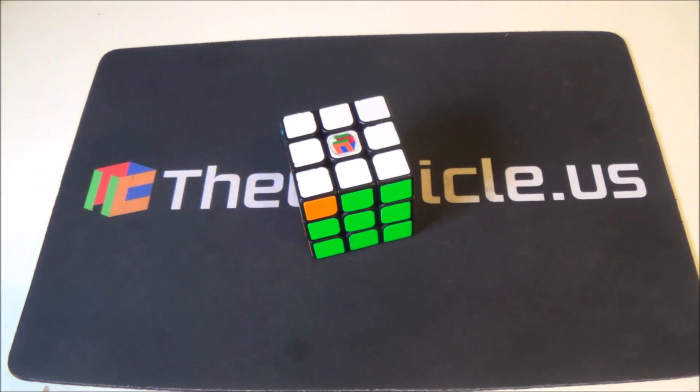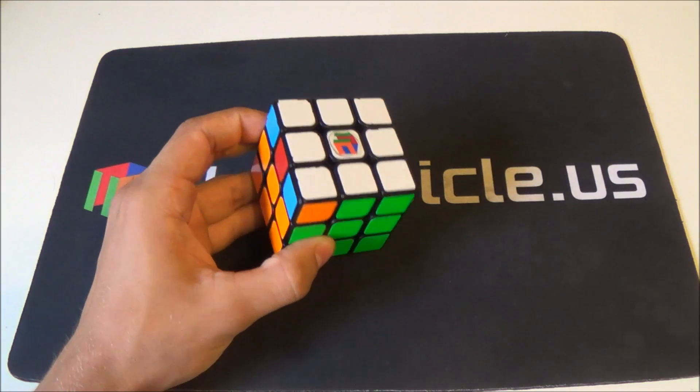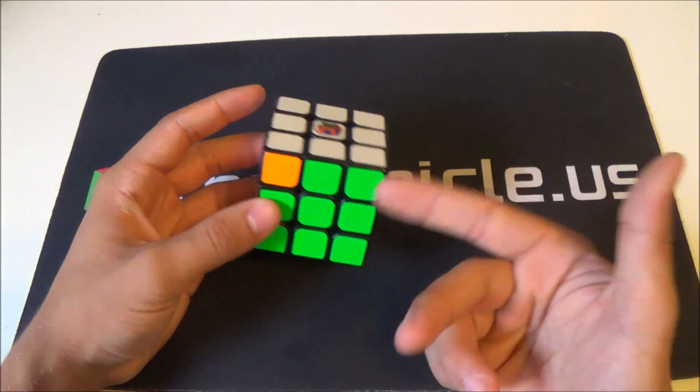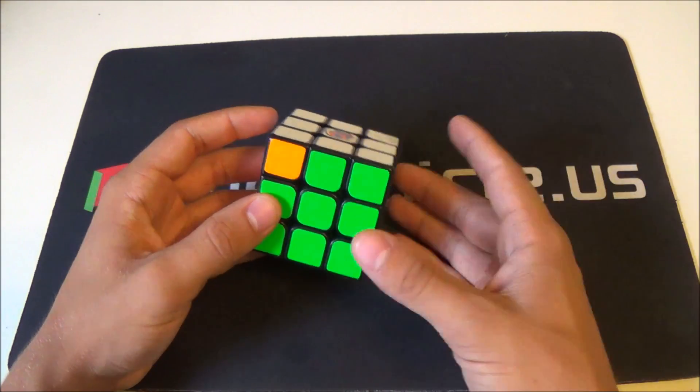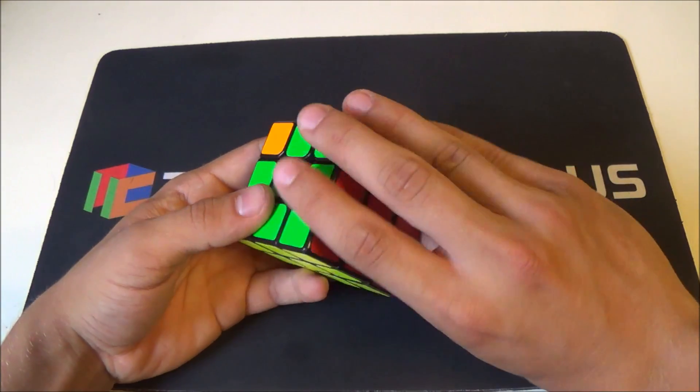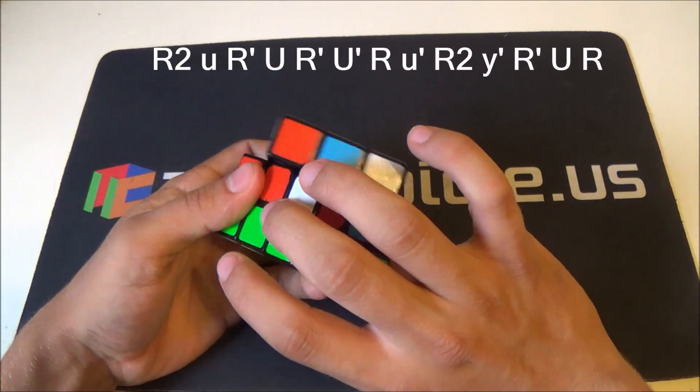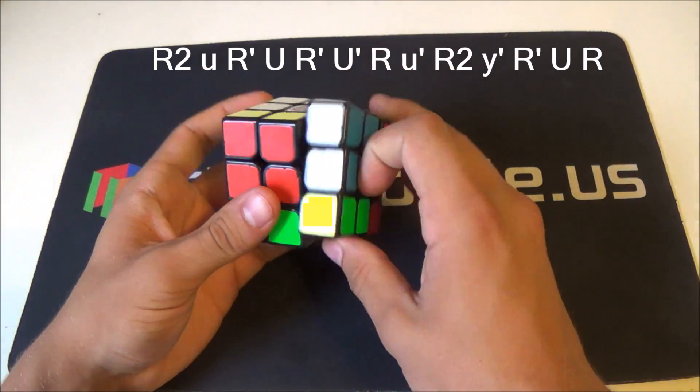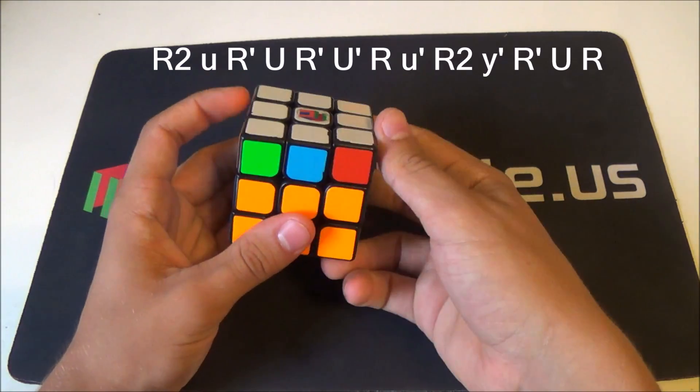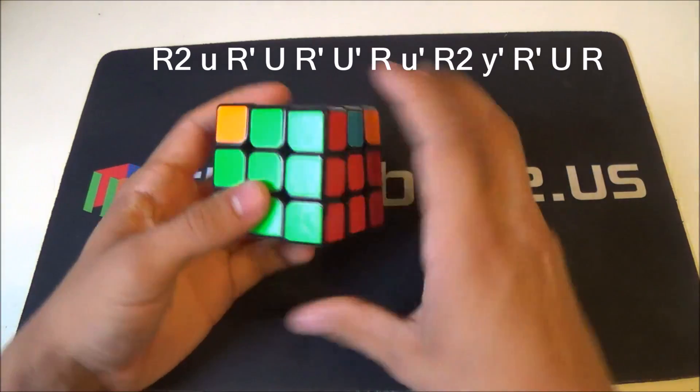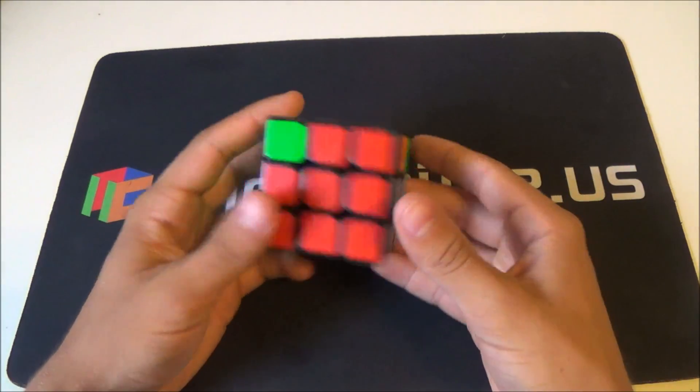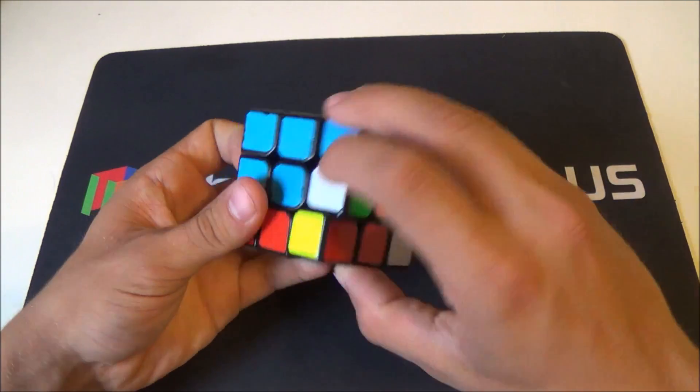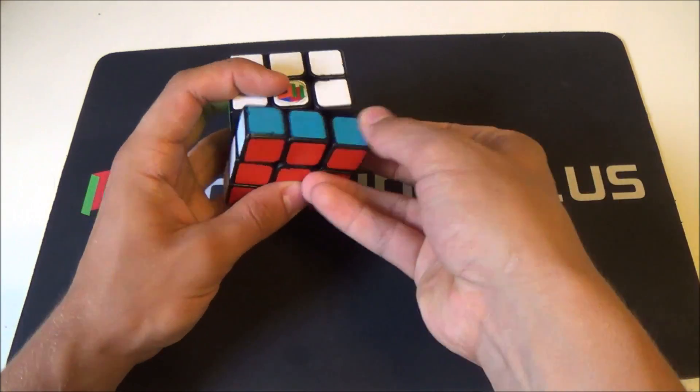Moving on to G-perms. This is the GA-perm. It's my favorite G-perm, one of my favorite PLLs. So I'll show you the way most people execute it. And then I know a lot of you have seen my special execution for this alg. It doesn't work for everyone though, so whatever. So the way most people do it. And I also have a special execution for this alg. I have another video on it. It looks like this. It starts out normal, but once you get to this part, I finish it off without rotating like that.